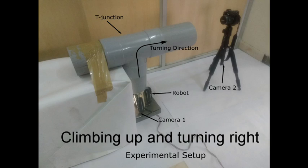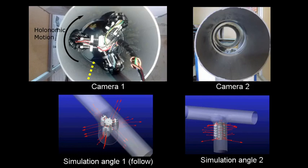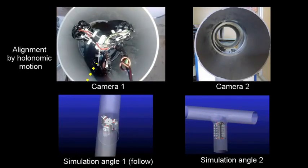In the experiments we first make the robot climb vertically and take a right turn. Cameras are installed at the end and at the bottom of the T-junction. The novel holonomic motion allows the robot to orient the module away from the T-junction and succeed the turn every single time.